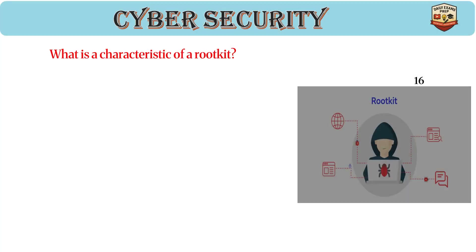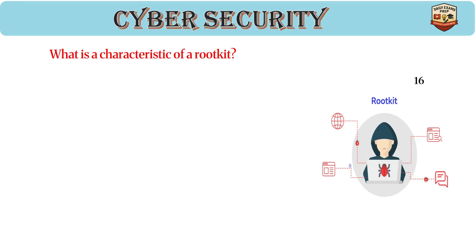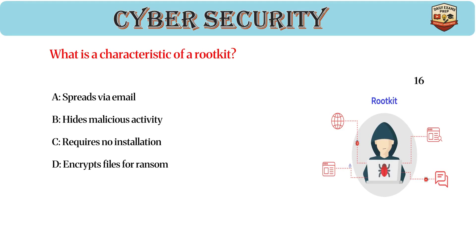What is a characteristic of a rootkit? Answer: B, hides malicious activity. Rootkits hide the presence of malware, operate at the kernel or application level, and are difficult to detect and remove.